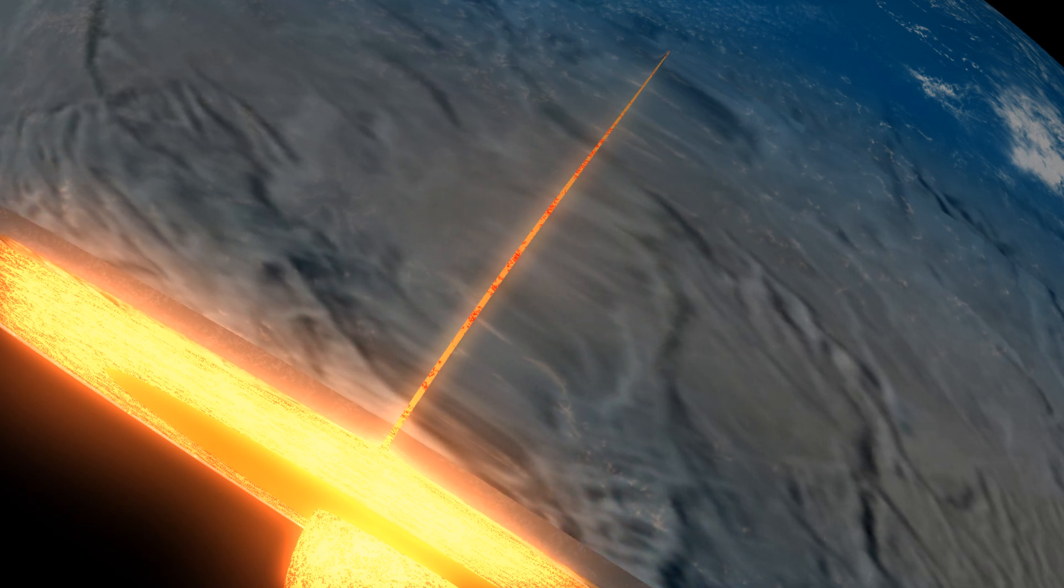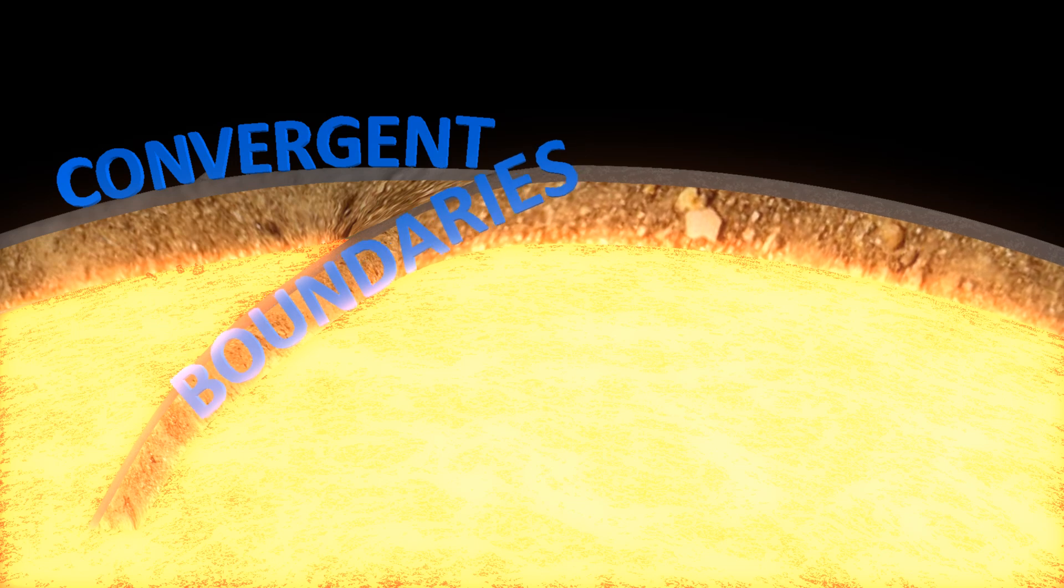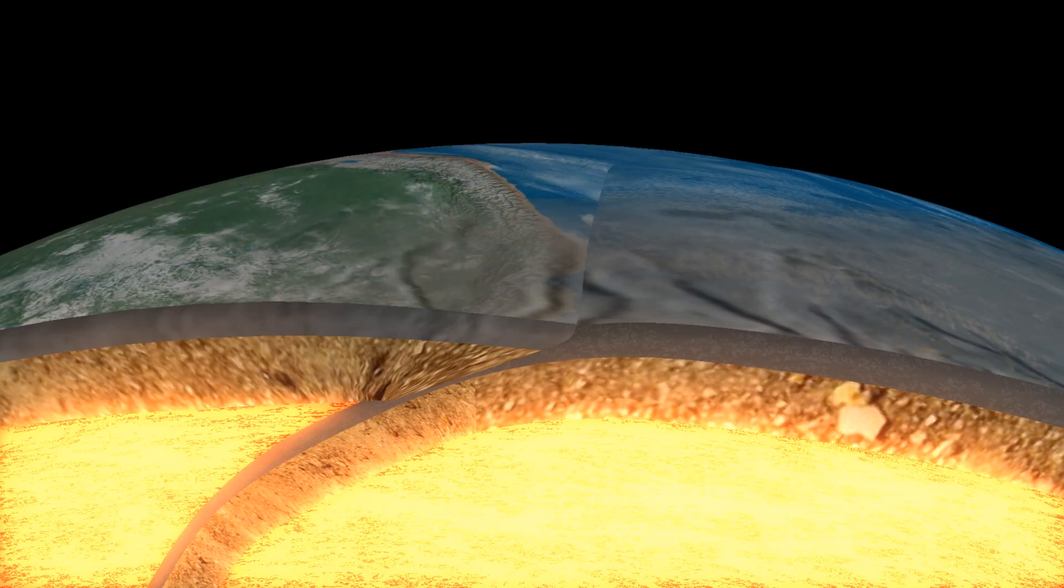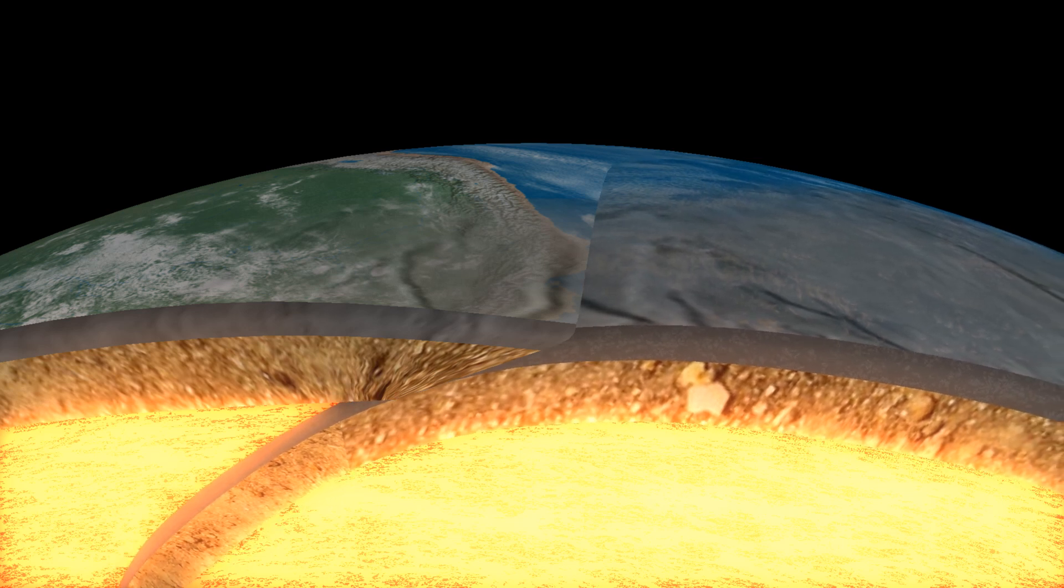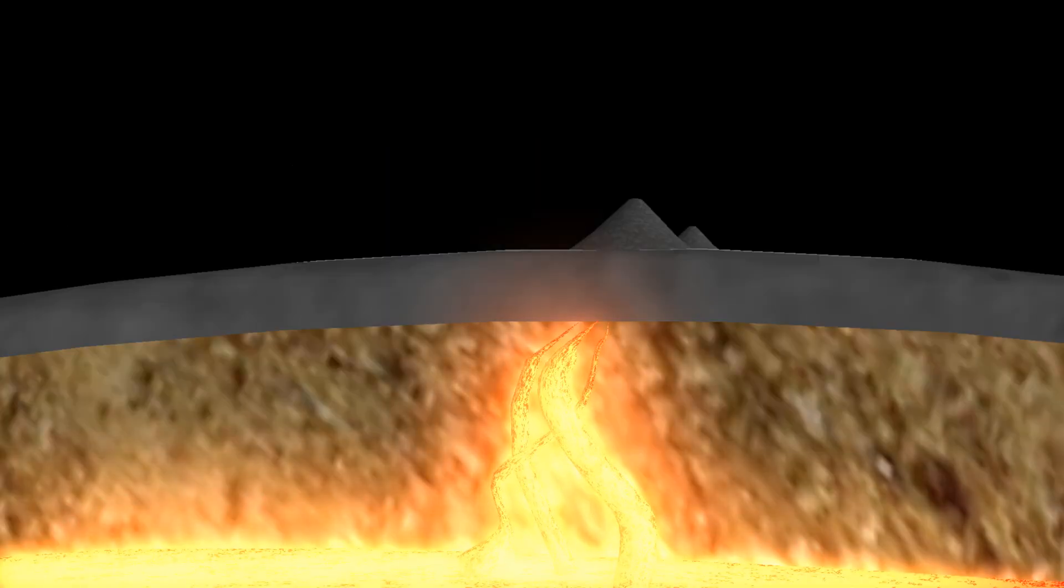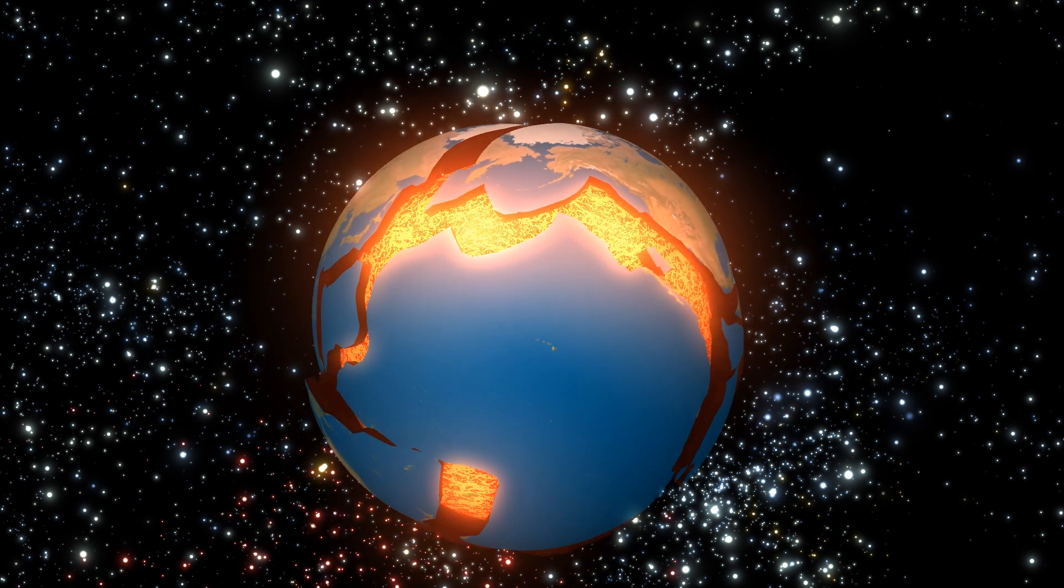At convergent boundaries, plates are running into each other. This may result in subduction, with one plate being forced under the other. In the ocean, this creates deep trenches. As one plate is driven deeper into the Earth, it heats up and melts, feeding volcanoes like those of the famous Ring of Fire in the Pacific.